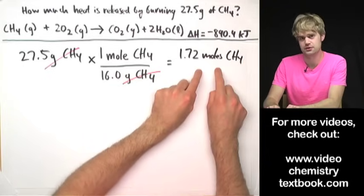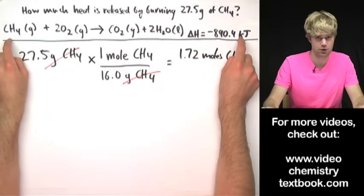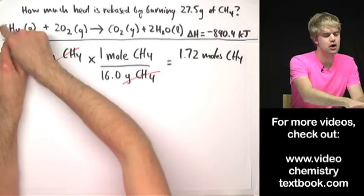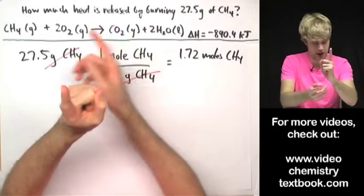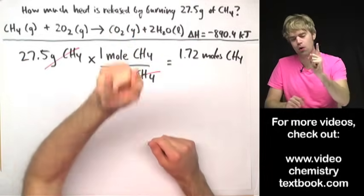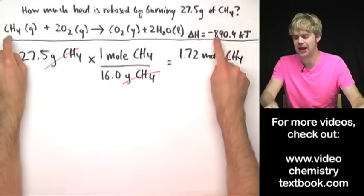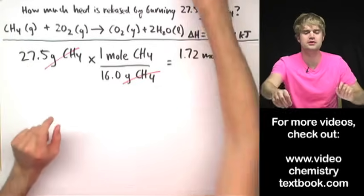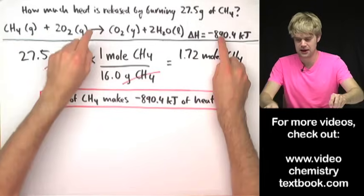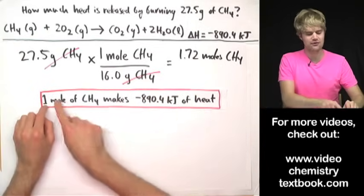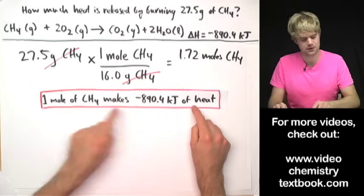Now I know how many moles of CH4 I have. Looking at the equation, there's no number in front of methane, which means we have one CH4 — one mole of CH4. One mole of CH4 corresponds to negative 890.4 kilojoules, meaning that one mole of CH4 produces this amount of heat. If I had exactly one mole I'd know exactly how much heat gets released.